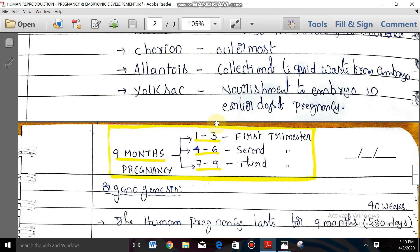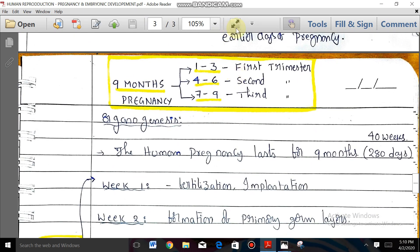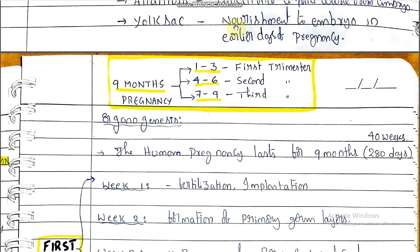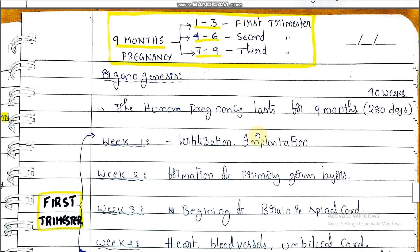The next topic is organogenesis. Organogenesis is the formation of organs. After completion of gastrulation and formation of ectoderm, endoderm, and mesoderm — the primary germ layers — body tissues and organ formation takes place. This process is called organogenesis.